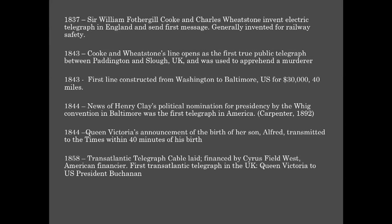Cooke and Wheatstone's line opened as the first true public telegraph between Paddington and Slough in the UK, and it was used to apprehend a murderer. The first line was constructed from Washington to Baltimore in the US for $30,000 over 40 miles in 1843. In 1844, news of Henry Clay's political nomination for the presidency at the Whig Convention in Baltimore was the first telegraph news in America. Across the Atlantic, the same year, Queen Victoria's announcement of the birth of her son Alfred was transmitted to the Times within 40 minutes of his birth.